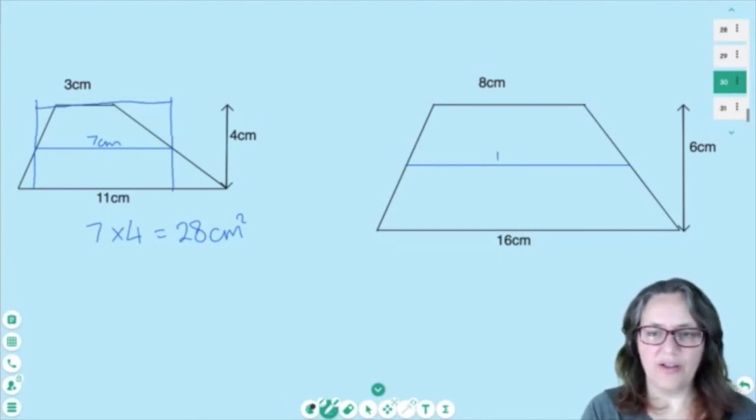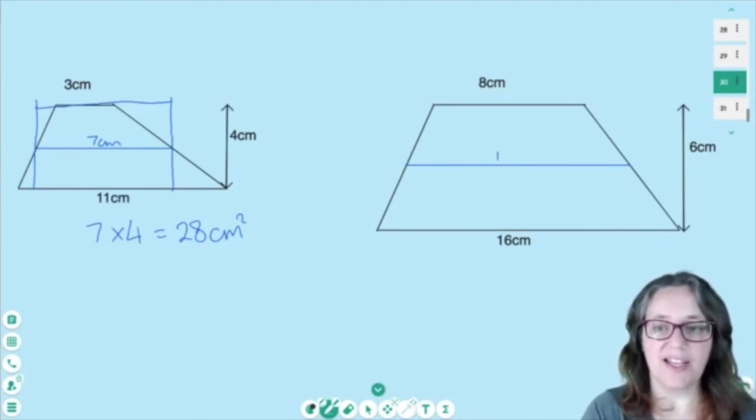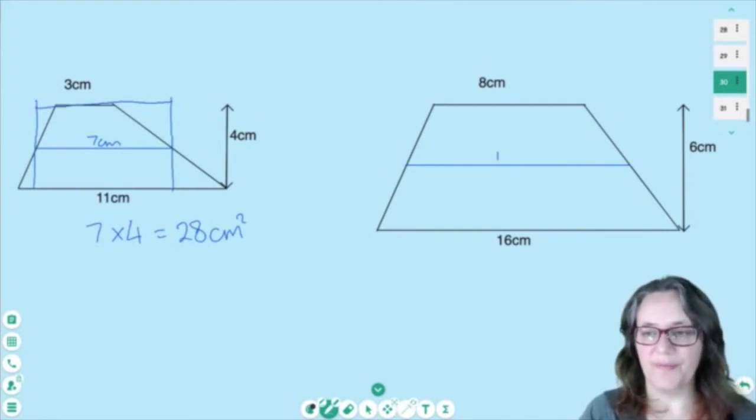Or you could go the gap from 8 to 16 is 8, so I'll just add on a 4 because that's halfway up. So my area equals 12 times 6, which is 72 cm squared.